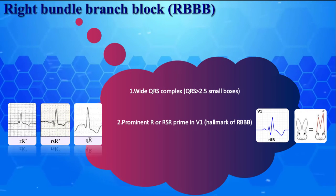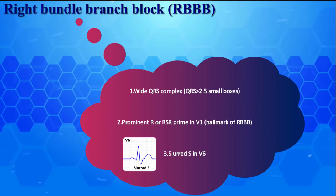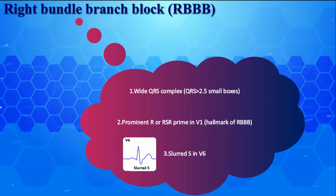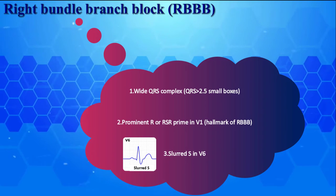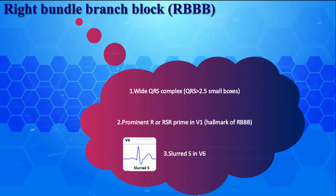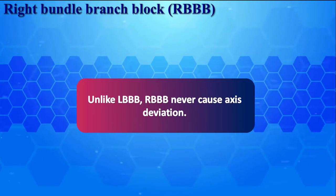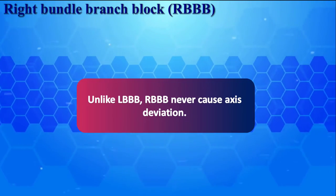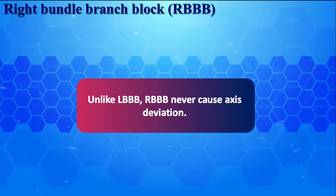Third and last feature in RBBB is a slurred S in V6. Never forget that, unlike LBBB, right bundle branch block never causes axis deviation.